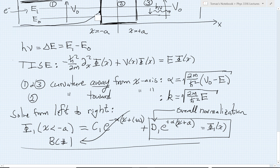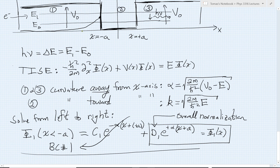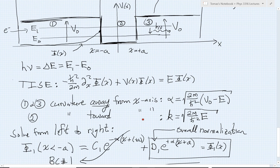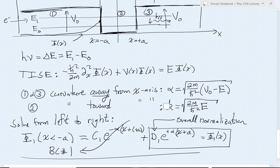Next we contend with region 2. In region 2 — phi sub 2, which applies for x between minus a and plus a — we have curvature toward the axis, so we have oscillatory solutions: sine and cosine. These can also be written as forward and backward traveling waves with complex exponentials, so we have to make a design choice.